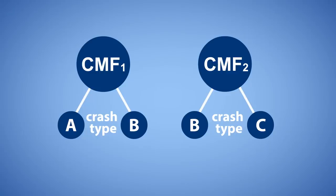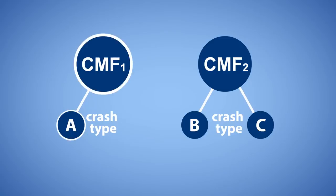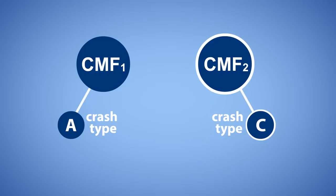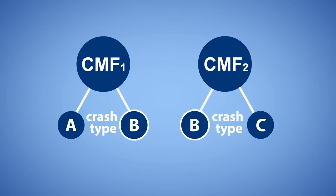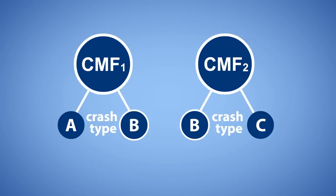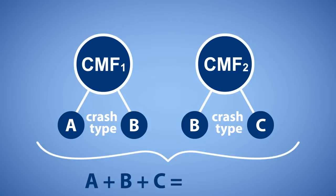If the CMFs apply to different crash types or severities, use this five-step process to apply the CMFs individually to the applicable crashes, then aggregate the results. Apply the smallest CMF to applicable crashes, excluding those crashes associated with other CMFs in the analysis. Apply the next smallest CMF to applicable crashes, excluding those associated with other CMFs. If necessary, estimate the CMF for the combined countermeasure effect and apply it to the applicable crashes common to both CMFs. Sum the estimated change in crashes to calculate the combined effect. Check that the estimated change does not exceed 100%.